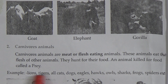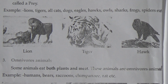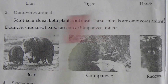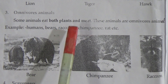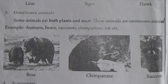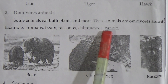Examples of carnivorous animals are lions, tigers, all cats, dogs, eagles, cocks, owls, sharks, frogs, spiders, etc. Some animals eat both plants and meat — these animals are omnivorous. Examples are humans, bears, raccoons, chimpanzees, rats, etc. Like humans, we eat chicken, milk, meat or beef, and we also eat plants, so we are omnivorous animals.